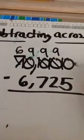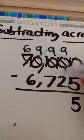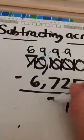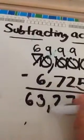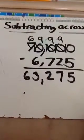Now we can start working out our problem. We're going to do 10 minus 5 is 5, 9 minus 2 is 7, 9 minus 7 is 2, 9 minus 6 is 3. Then we're just going to bring down our other 6. So our answer for this problem would be 63,275.